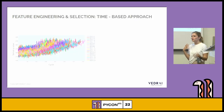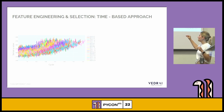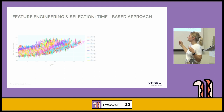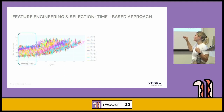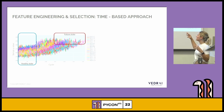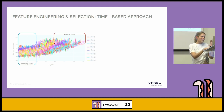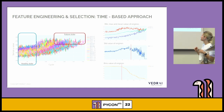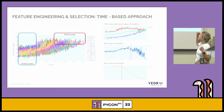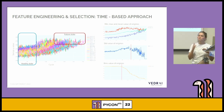Then we apply feature engineering and feature selection. Looking at the fourth sensor across all 100 engines, we can see that at the beginning all sensors are quite equal — this is the healthy state — and at the end they diverge, which is the failure state. We applied the time-based approach, checking mean, max, standard deviation, and root mean square. The first statistic may not provide useful information, but the second and third show that after around 140 cycles there are already detectable changes.